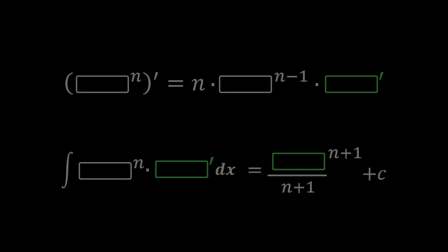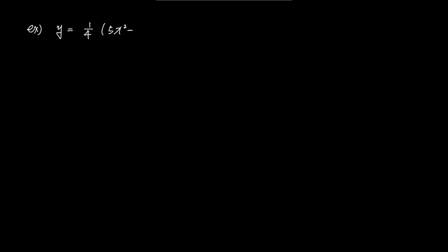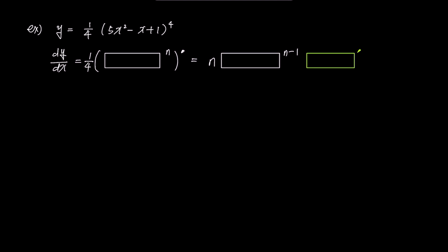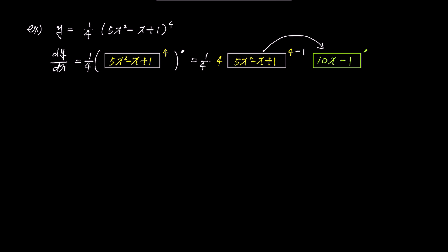Here we have y = ¼(5x² − x + 1)⁴. We want to find dy/dx using the box rule. The ¼ can be left outside. The term inside the box is 5x² − x + 1 and the exponent n is 4. For the final step, we put the derivative of the box, which is 10x − 1, into the green box prime. Simplifying, the answer becomes (5x² − x + 1)³ times (10x − 1).